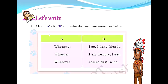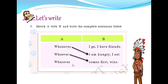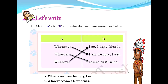Now we have a 'Match the Following' exercise. Match column A with column B and write the complete sentences. Column A has the words: whenever, whoever, wherever. Match these with the sentences in column B and write them in your textbook. The answers are: Whenever I am hungry, I eat. Whoever comes first, wins. And wherever I go, I have friends. Copy these sentences down.